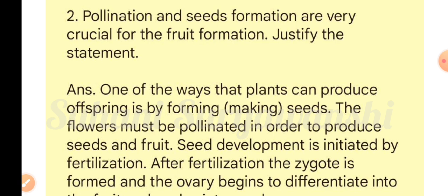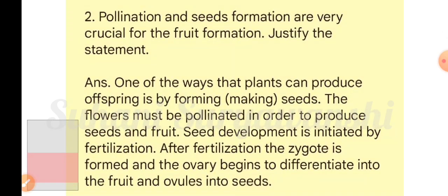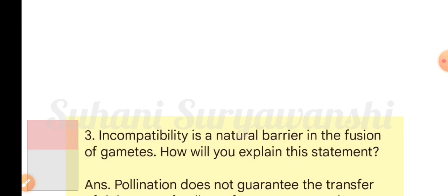Question two: pollination and seed formation are very crucial for fruit formation — justify the statement. One of the ways plants can produce offspring is by forming seeds. The flowers must be pollinated in order to produce seeds and fruit. Seed development is initiated by fertilization; after fertilization the zygote is formed, the ovary begins to differentiate into the fruit, and the ovules into seeds.